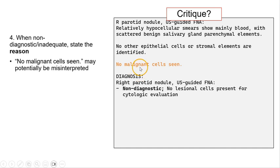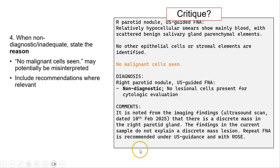So just be careful. Including this line may potentially be misinterpreted by clinicians as this being a benign result. It is also useful to include recommendations where relevant. So it is noted from the imaging findings that there is a discrete mass. The findings in the current sample do not explain a discrete mass lesion. Hence, the recommendation is this. Repeat FNA is recommended under ultrasound guidance with ROSE.